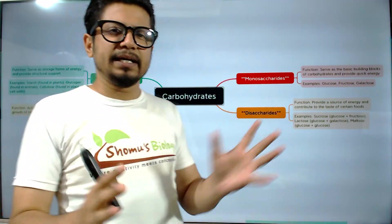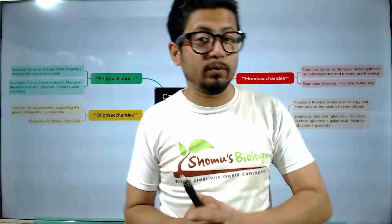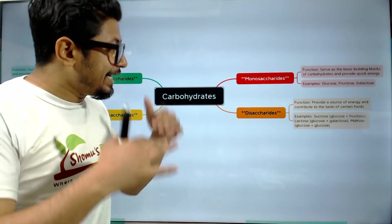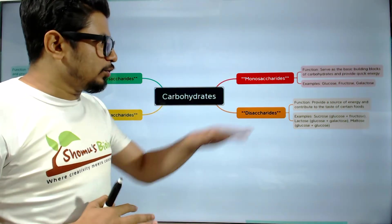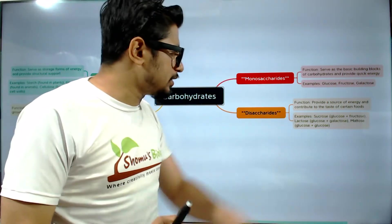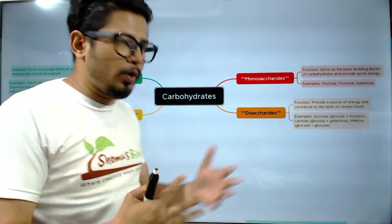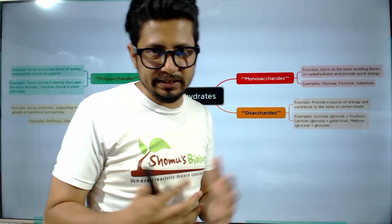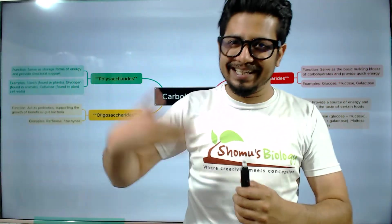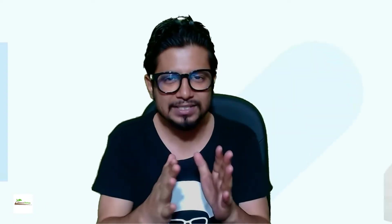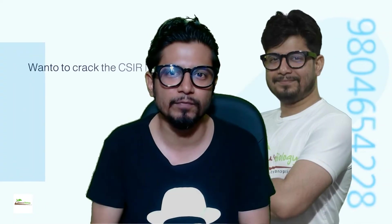So that concludes our understanding of simple classification of carbohydrates. Now we need to dig deeper into the types of bonds that are present in disaccharides, types of bonds found in polysaccharides, and everything else in the later mind maps.